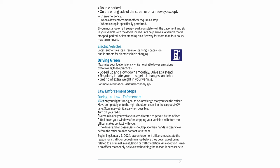Law enforcement stops: During a law enforcement stop, turn on your right turn signal to acknowledge that you see the officer. Move completely onto the right shoulder, even if in the carpool/HOV lane. Stop in a well-lit area when possible. Turn off your radio. Remain inside your vehicle unless directed to get out by the officer. Roll down your window after stopping and before the officer makes contact with you. The driver and all passengers should place their hands in clear view before the officer makes contact.